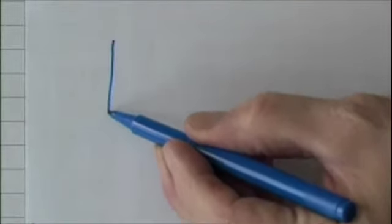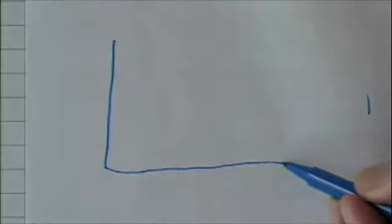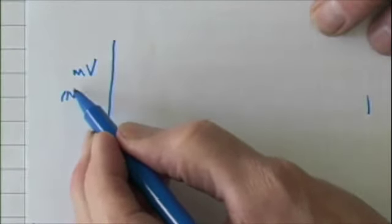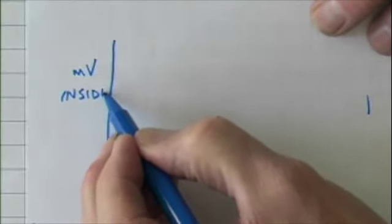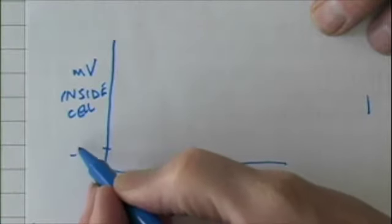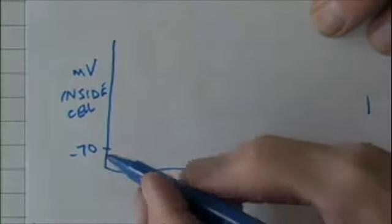Let's graph the voltage difference on the inside of the cell. This part of the graph represents the millivolts inside the cell. And on average, it's about minus 70 millivolts.